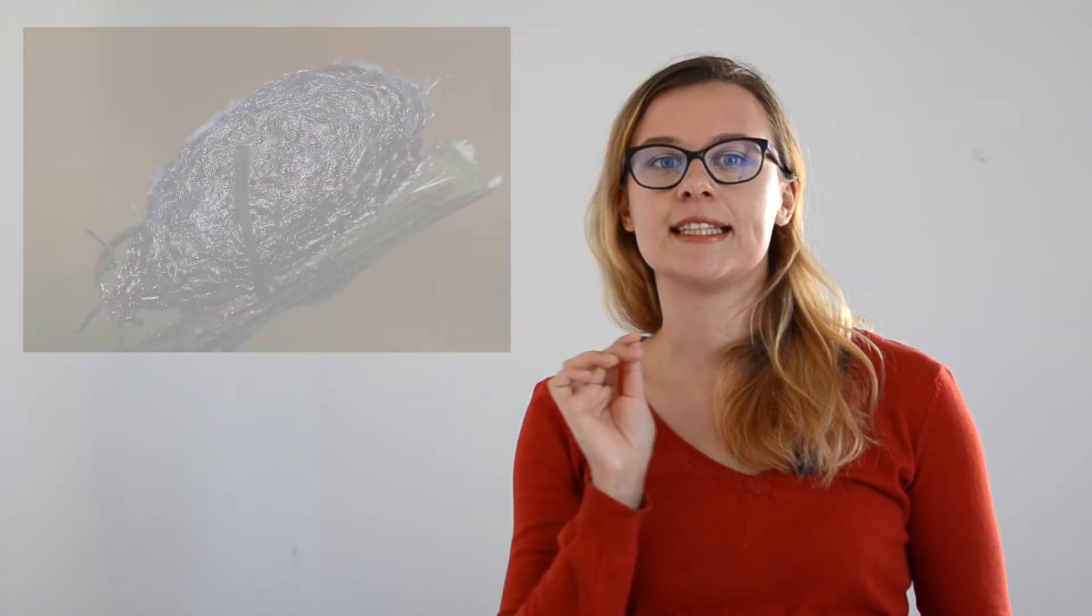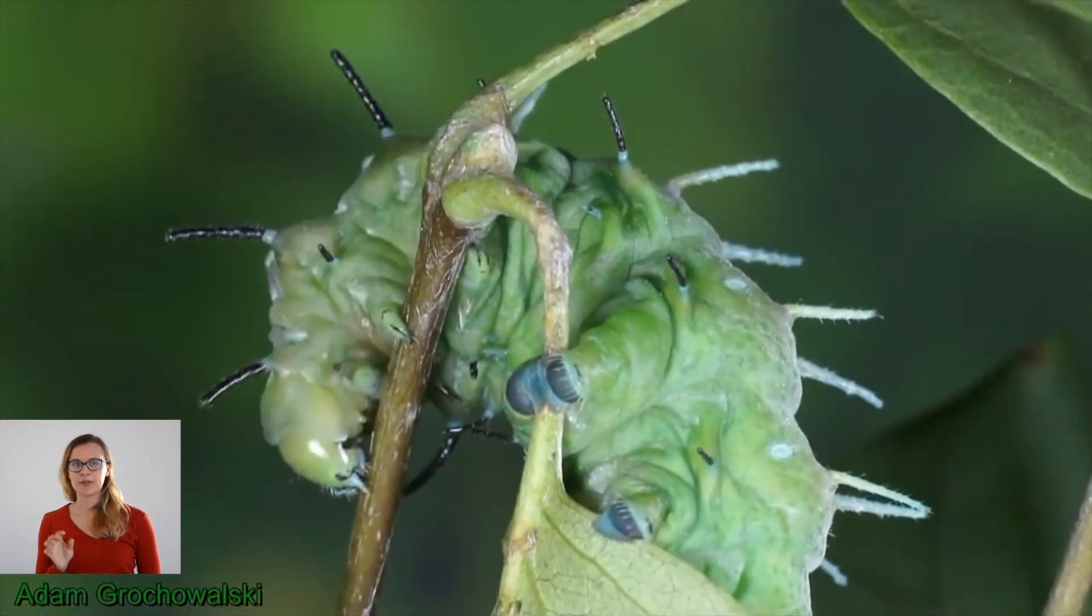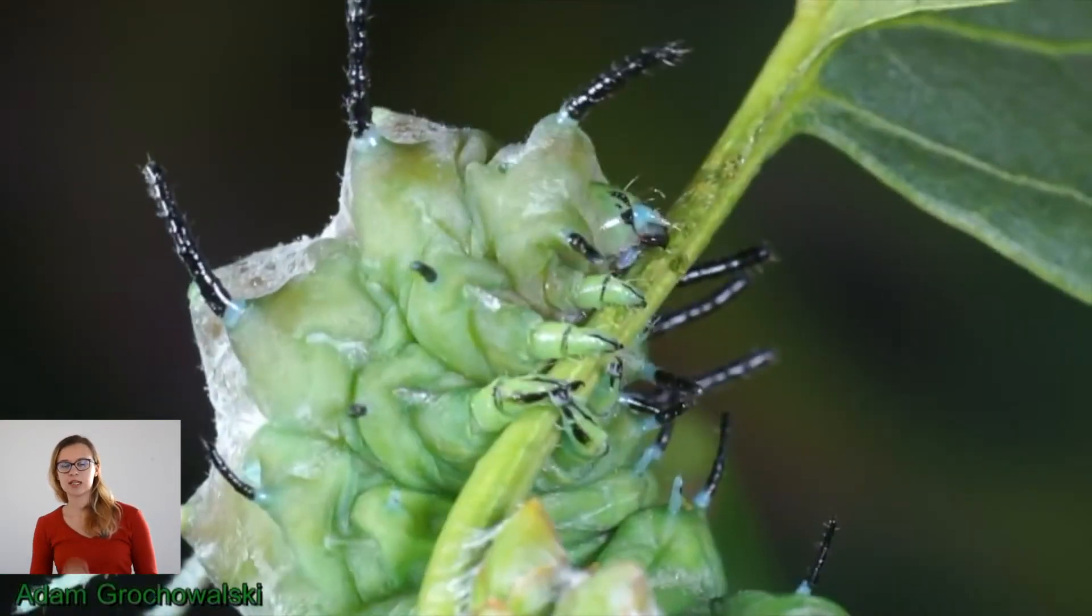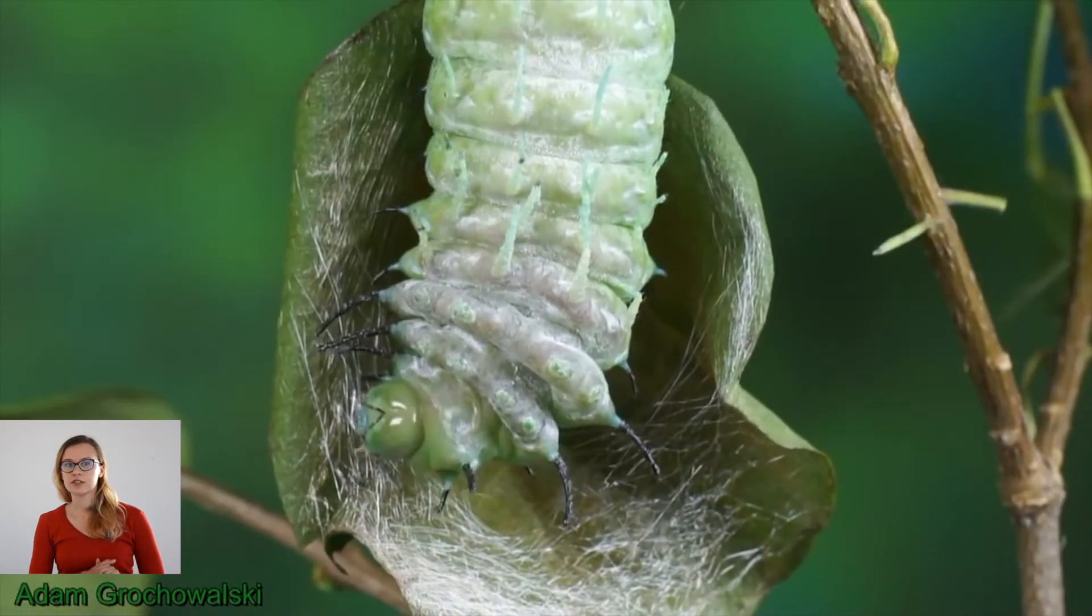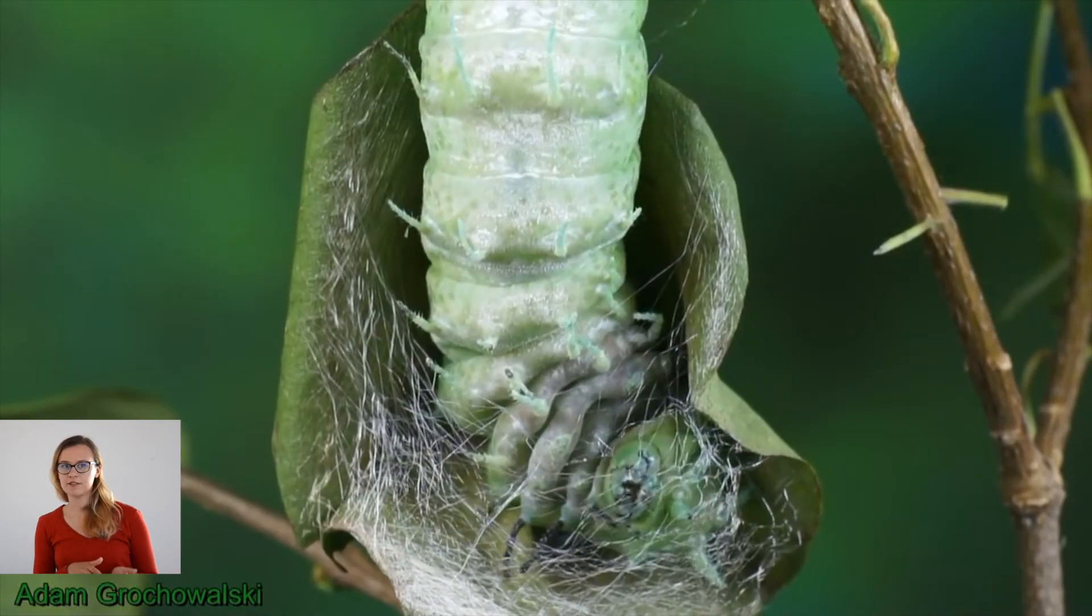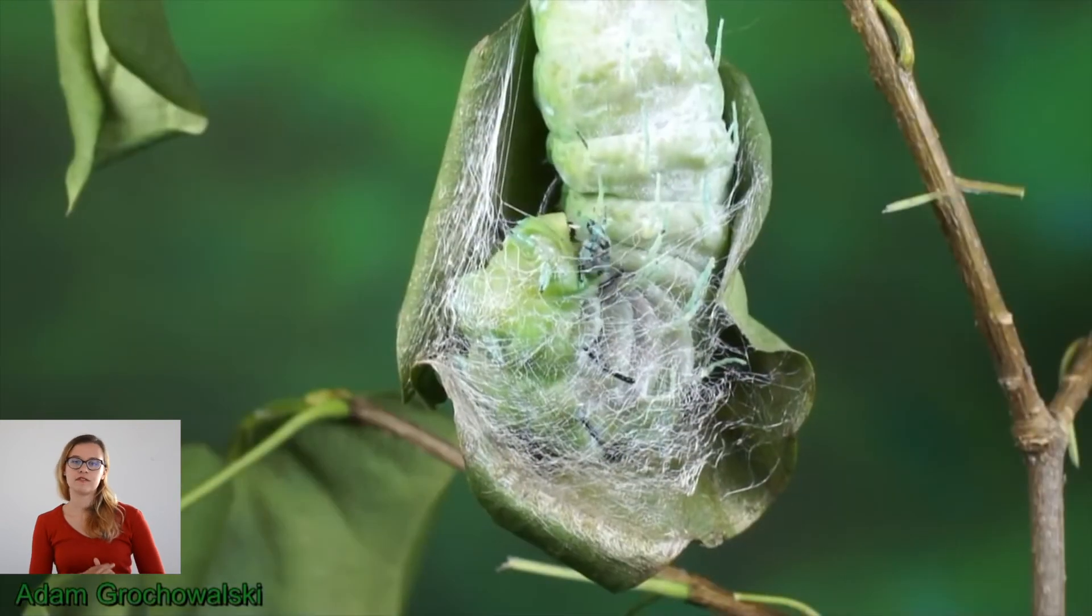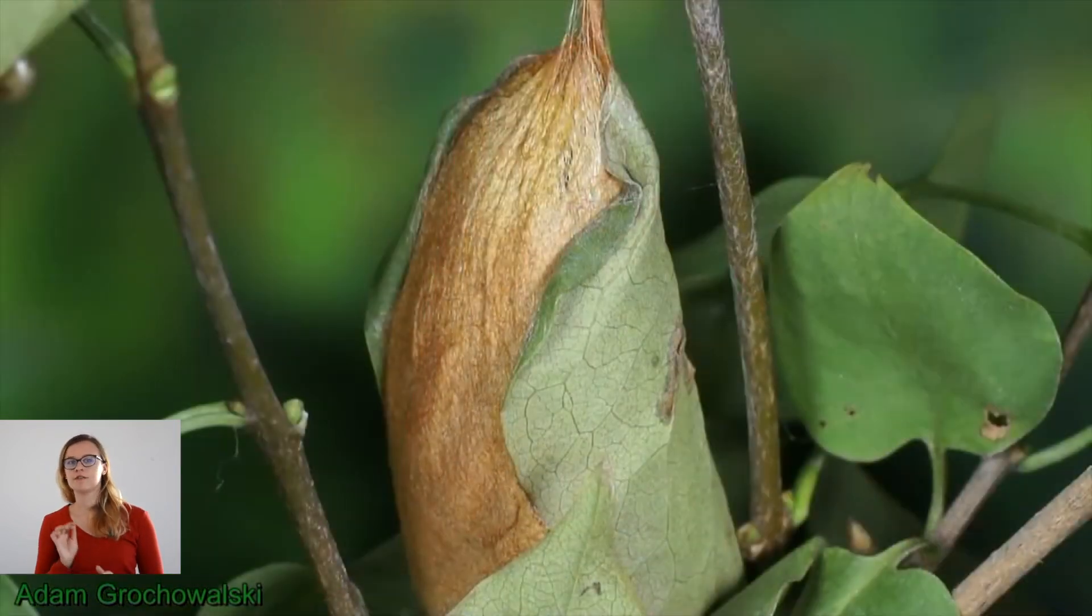Cocoon is made entirely by the caterpillar. He makes it just before it becomes a chrysalis. Caterpillars use thin threads from their saliva glands, sometimes wrapping inside sticks or leaves which he finds around him so the job of weaving the cocoon will be faster.